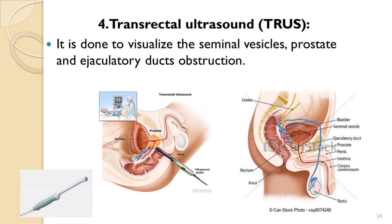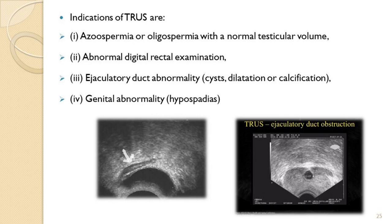Transrectal ultrasound is preferred to diagnose abnormalities of the seminal vesicles, prostate, or ductal system, as this route gives a better image of the reproductive organs. It is indicated in infertility when ductal system or vesicle or prostate abnormalities are suspected, particularly in patients with normal testicular volume but oligospermia or azoospermia. It is also used to rule out ejaculatory duct abnormalities or prostatic abnormalities, or when abnormal per-rectal findings such as prostate enlargement are noted.